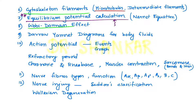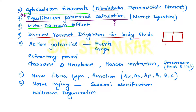You should also know Darrow-Yannet ionic diagrams. This topic is also important for INICT or AIIMS examination. Different components of body fluid — ECF, ICF — and their changes with different pathologies; you should know Darrow-Yannet ionic diagrams. Next, action potential is one of the very important topics for NIT examination and also for INICT.